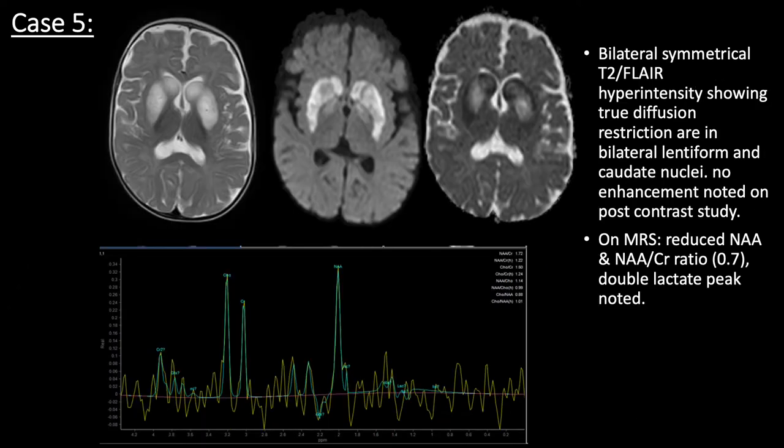A case of a 6-month-old shows diffusion restriction in basal ganglia with similar findings on MRS.